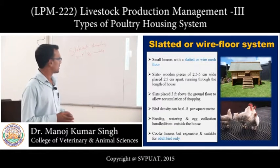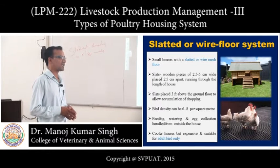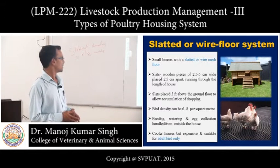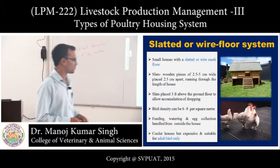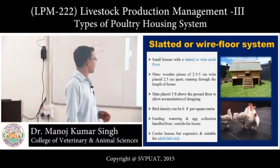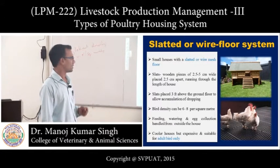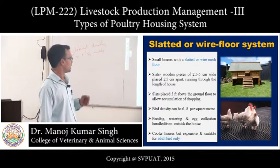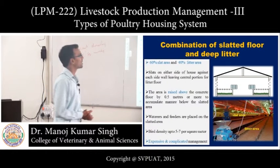All droppings accumulate below and can be collected later. Bird density is 6 to 8 birds per square meter. Feed, watering, and egg collection are handled from outside the house.